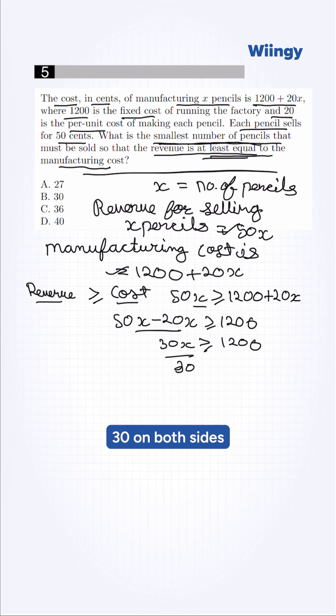Now we divide 30 on both sides to isolate X. This gives us X is greater than or equal to 40.